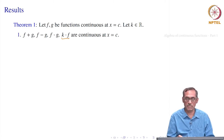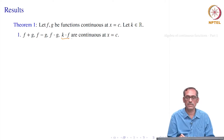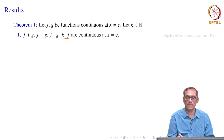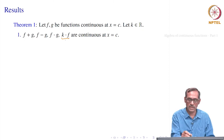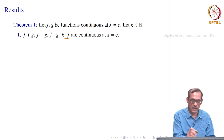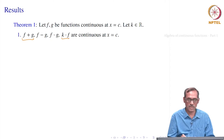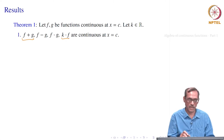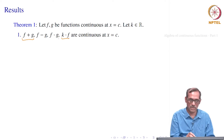That follows directly from the limit: the limit of k·f(x) as x goes to c is just k times the earlier limit, which equals k·f(c). That is why k·f is also continuous at x = c. Similarly, f + g, f − g, and f · g are also continuous at x = c — their definitions follow, and continuity comes from the algebra of limits.